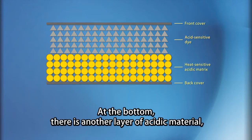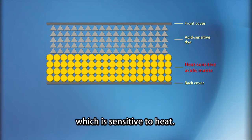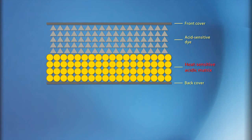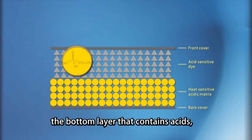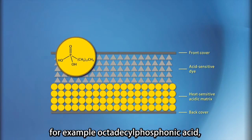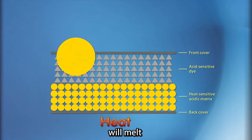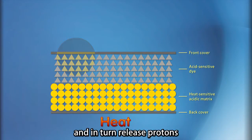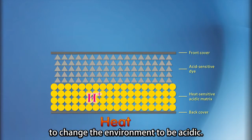On the bottom, there is another layer of acidic material which is sensitive to the heat. When heated, the bottom layer that contains acid, for example octodichophospholic acid, will melt and in turn release protons to change the environment to be acidic.